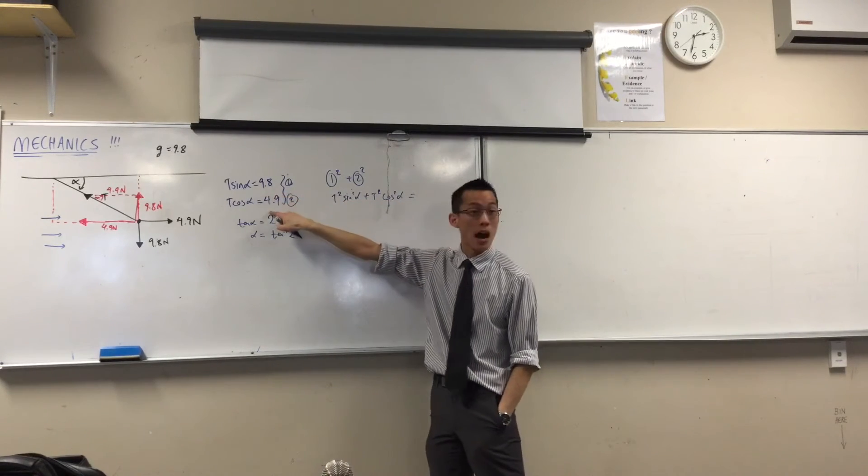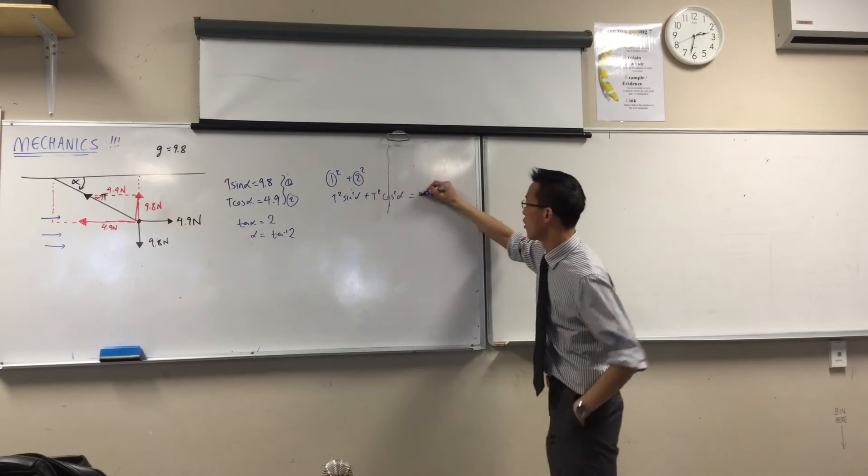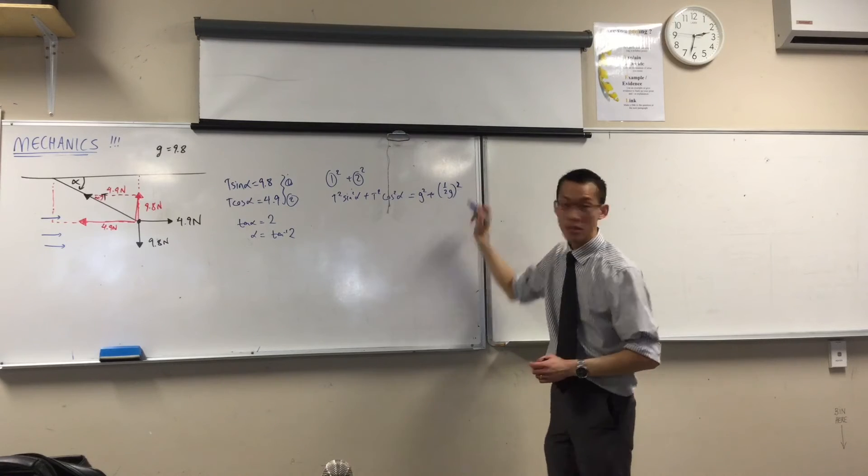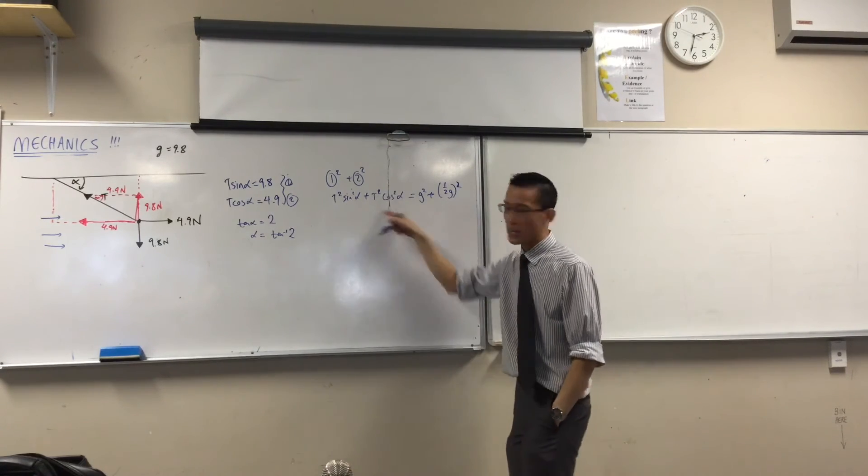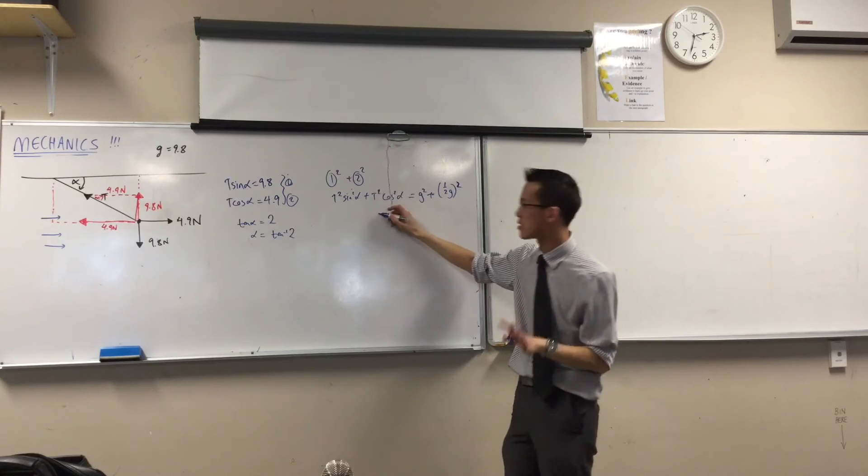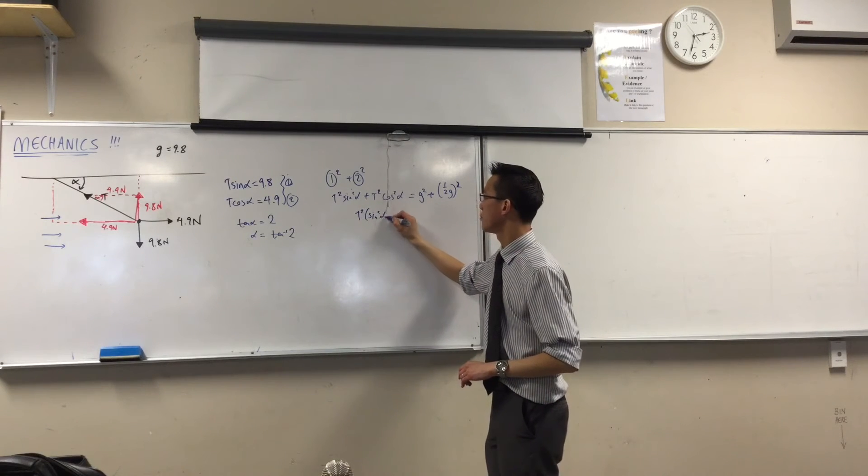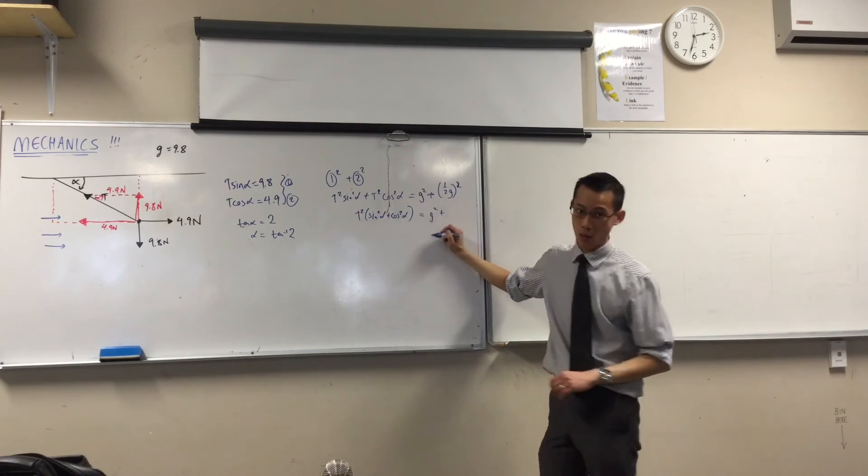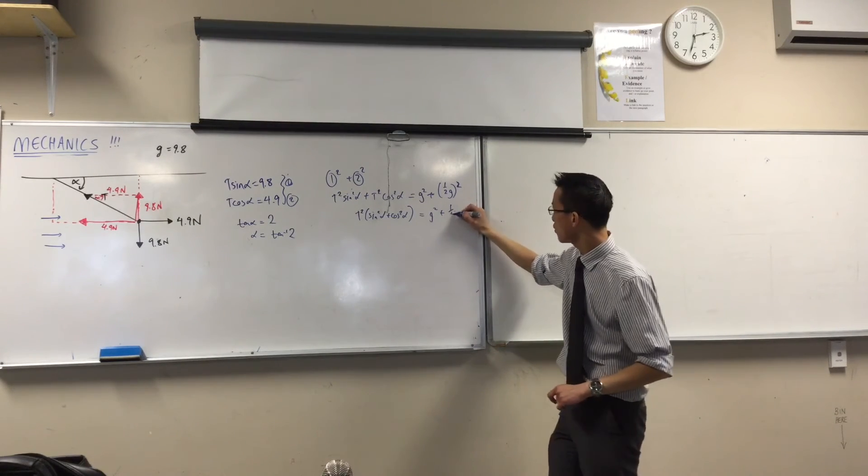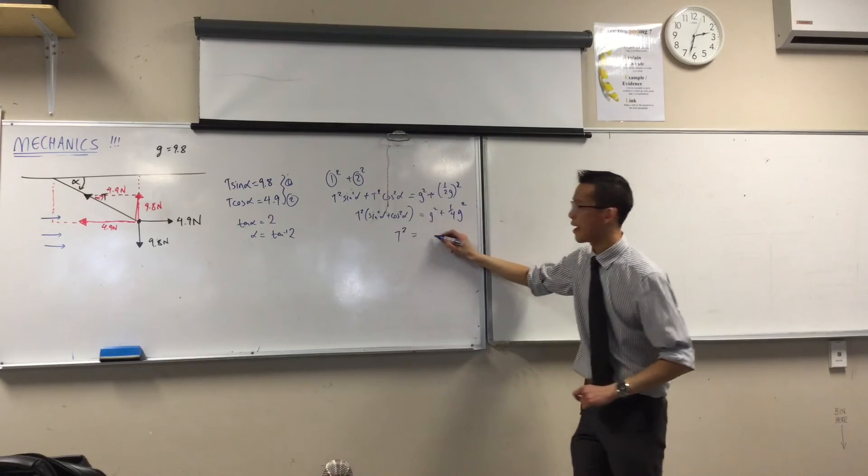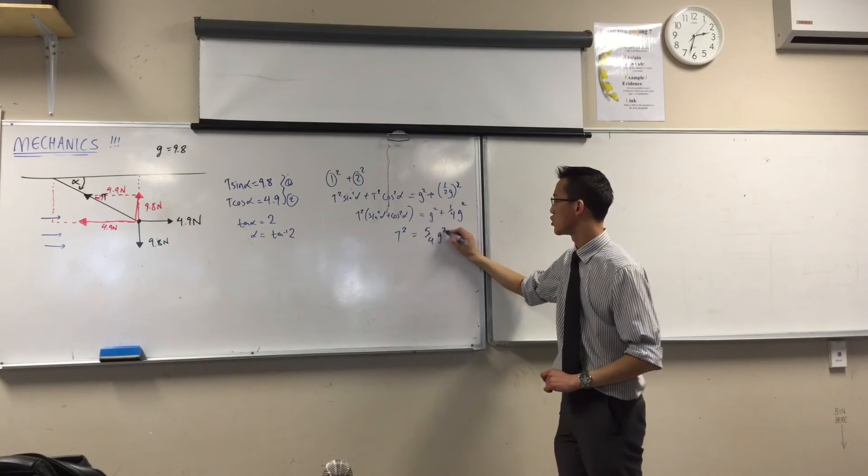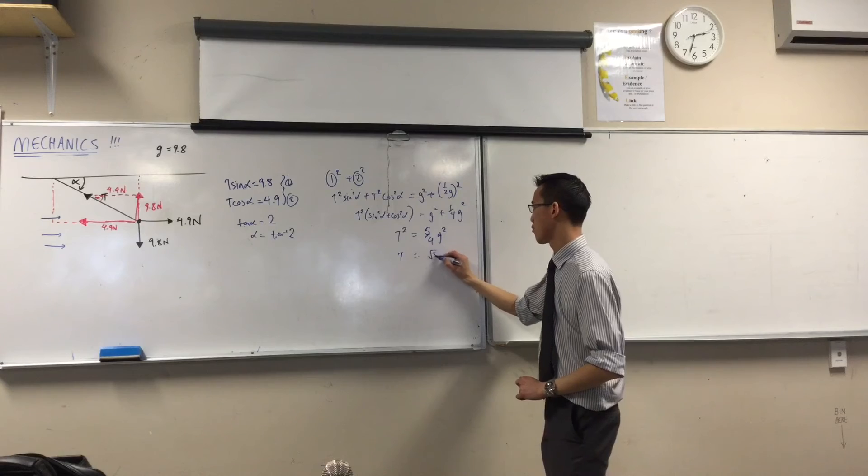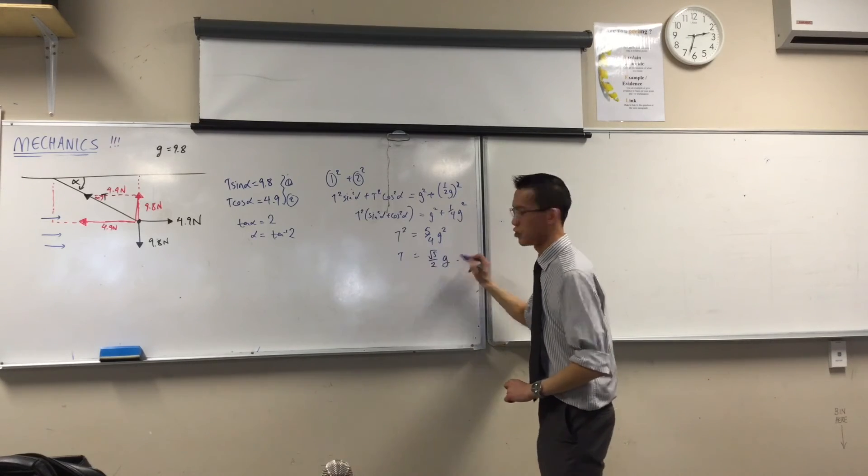Therefore, this is G and this is half G, right? So therefore, G squared and half G squared. Over here, what happens on the left-hand side? This is T squared outside of sine squared plus cosine squared, and then I will let that equal to 1. This is G squared plus a quarter G squared. So now I've got T squared times 5 on 4 G squared, so now you take the square root, which gives you root 5 on 2 G. Because you defined it to be positive.